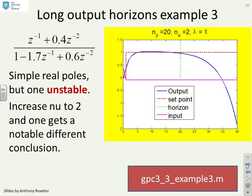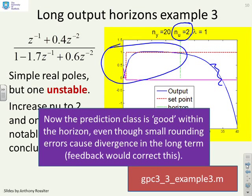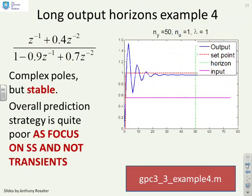Here's an interesting observation, though. I've taken the same unstable example, but now I've made nu equal to 2 rather than 1. And because I've done that, there's some capacity in the predictions to actually stabilize this unstable dynamic. And you'll notice over the prediction horizon, now the predictions are looking fairly reasonable. OK, they do diverge once you go beyond the prediction horizon because of rounding errors and the like, but over the prediction horizon itself, they're looking quite reasonable and the steady state error is small. So the prediction class is good within the horizon, even though small rounding errors cause divergence in the long term, and the use of feedback would be able to correct this.